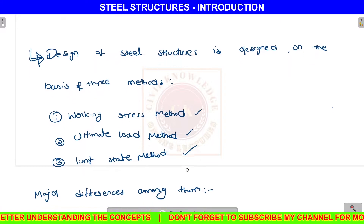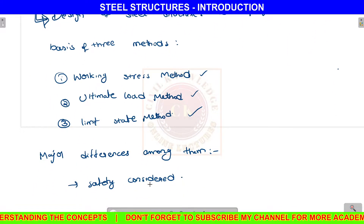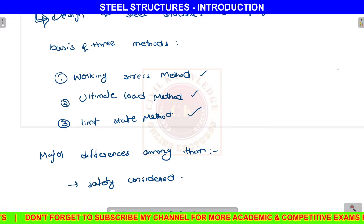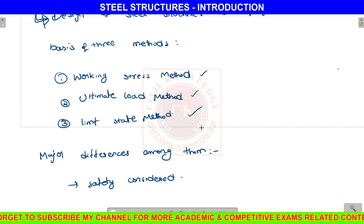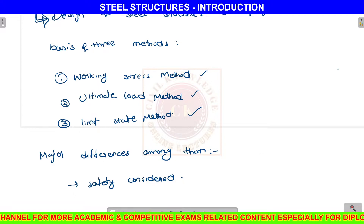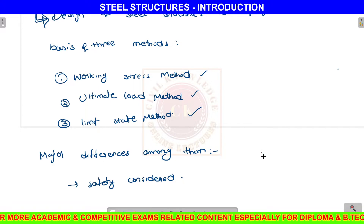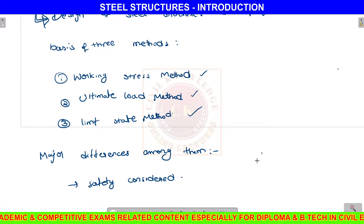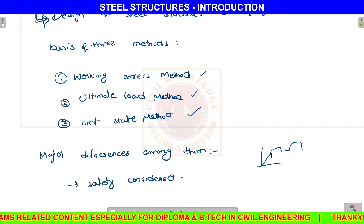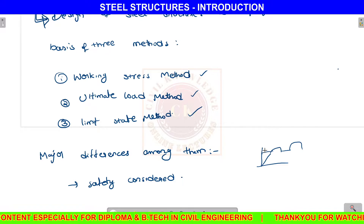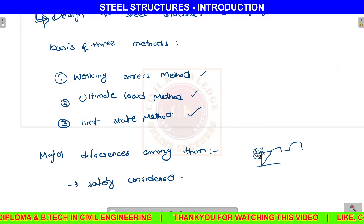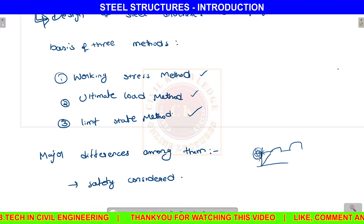Next is safety. In the working stress method, we work with service loads. We have to control the material — specifically the steel. Steel members are used based on yield strength. There is a stress-strain graph of steel. The material has a high safety rank, and permissible stresses are used in this design. That is the working stress method design.